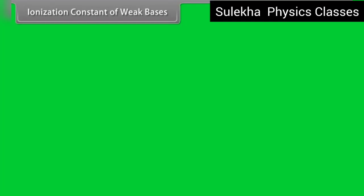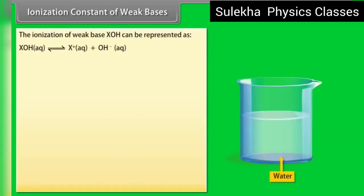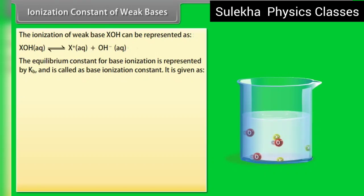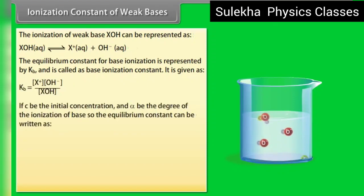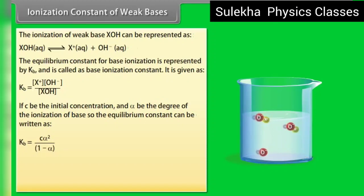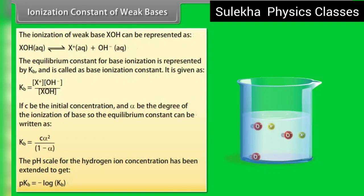Ionization constant of weak bases: the ionization of a weak base XOH gives the base ionization constant Kb. If C is the initial concentration and alpha is the degree of ionization, then Kb = Cα²/(1 − α).